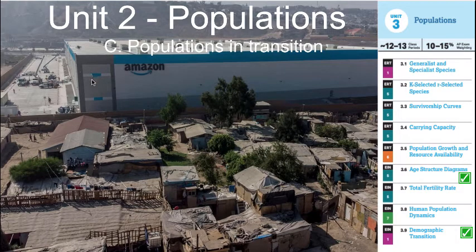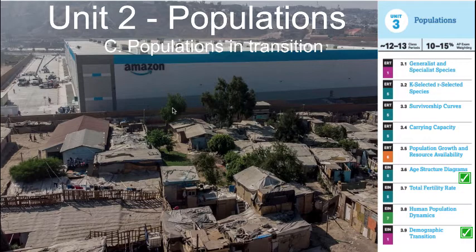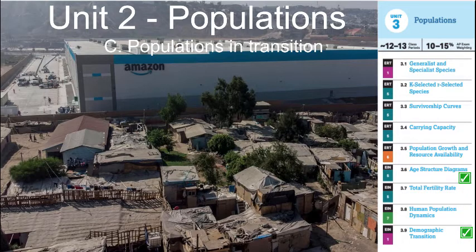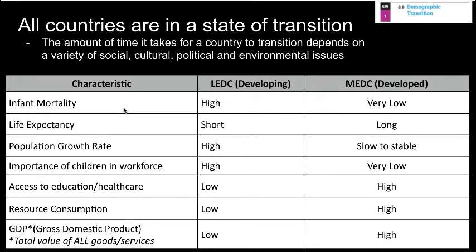Welcome back to our next set of notes in Unit 2: Populations. Today we'll be discussing populations in transition. Our two main items from the course exam description are age structure diagrams and the topic of demographic transition. We're starting off looking at a picture of wealth disparity and populations, and the idea that wealth and populations tend to transition through a series of steps in countries. We'll look at characteristics of moving countries from LEDC — least economically developed countries — to MEDC — more economically developed countries.